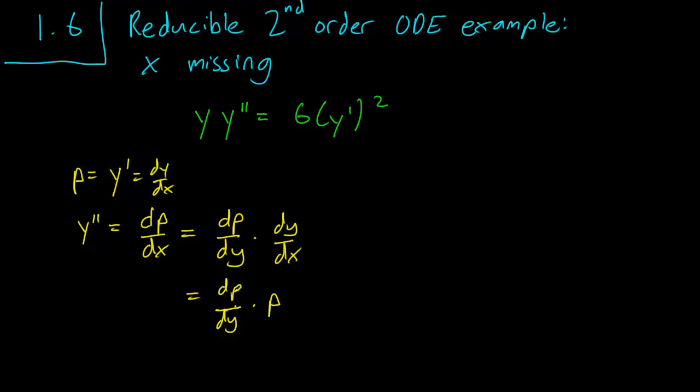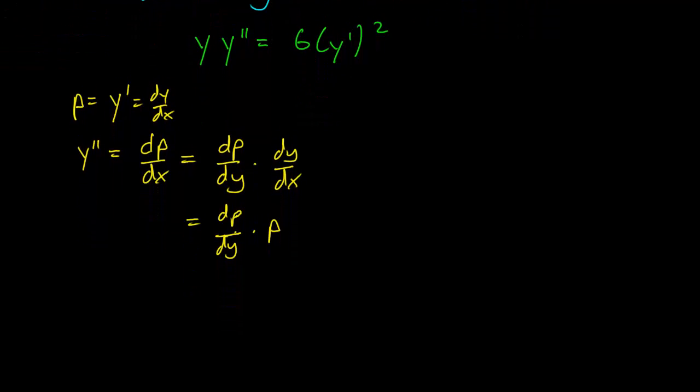All right, so what's going to happen here is that we can replace y stays, y' becomes dp/dy times p, and this is equal to 6 times p squared.